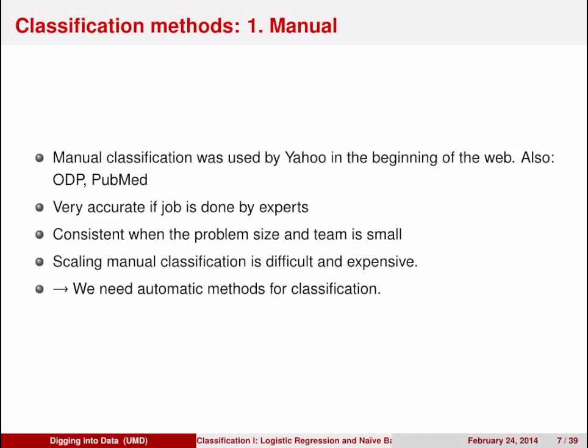At first, classification was mostly a manual task. Humans can do a very good job of classifying documents, and entire academic sub-disciplines have been developed around classification of documents by humans. This can result in very high quality classification schemes when you're not having to deal with thousands of documents every second. But manual annotation does not scale and it's very expensive. To do it well, you simply need automatic methods for classification.